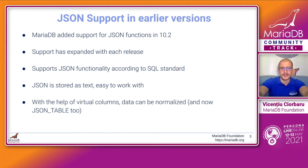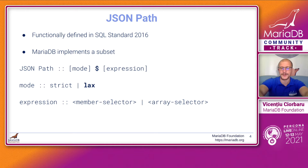But that's not all. In 10.6, we've added the brand new feature called JSON Table. And we cannot talk about JSON Table unless we first start with the basis, and that is the JSON path. JSON path is a way that we select elements from JSON. It's very similar to other path defining languages, like XPath for looking through XML documents.